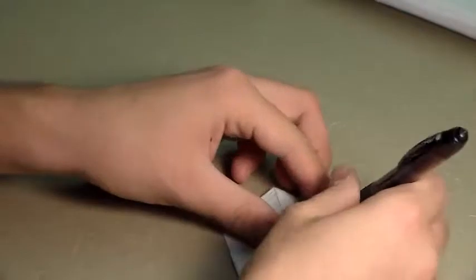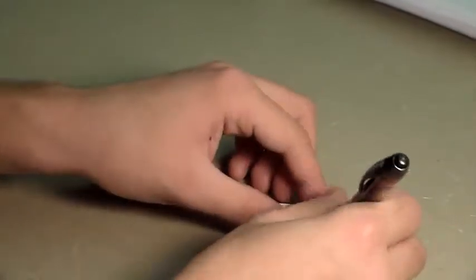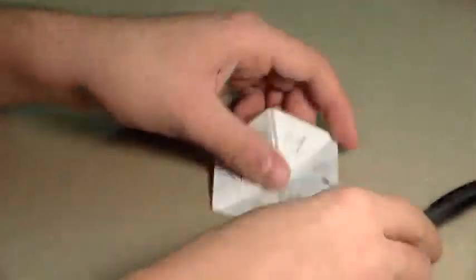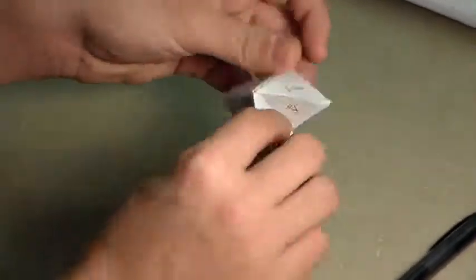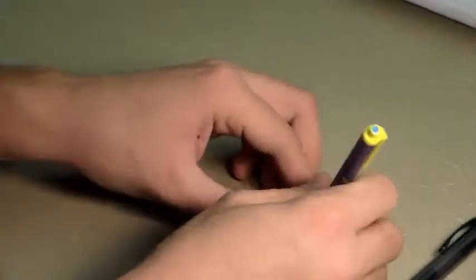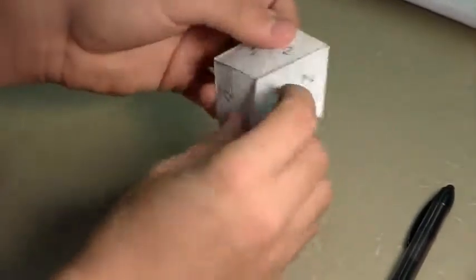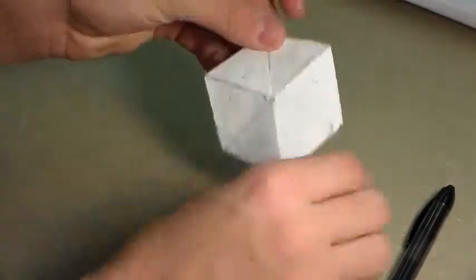To distinguish a side, we used a different color or number in this case. So for example, this is side 1. This is side 2. And this is side 3.